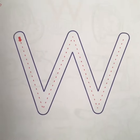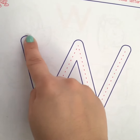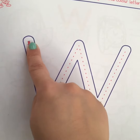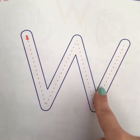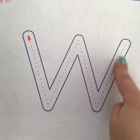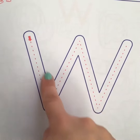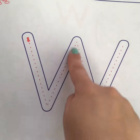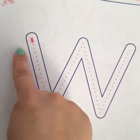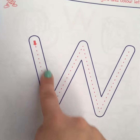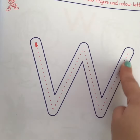First of all, we're going to trace the letter W. Start with the arrow: down, up, down, up — one, two, three, and four.